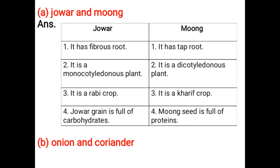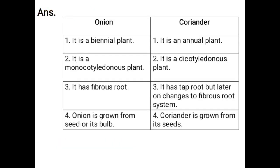Onion and Coriander: Onion is a biennial plant; Coriander is an annual plant. Onion is a monocotyledonous plant; Coriander is a dicotyledonous plant. Onion has fibrous roots; Coriander has a tap root that later changes to a fibrous root system. Onion is grown from seed or its bulb; Coriander is grown from its seeds.